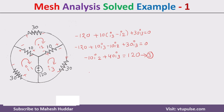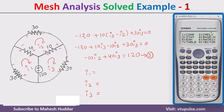By solving equations 1, 2, and 3 we will get I1, I2, and I3. By using a scientific calculator we can find the current values. For this we need to select the mode, then select 5 (equation mode). Since we have 3 unknowns, we will select 3.